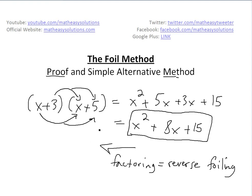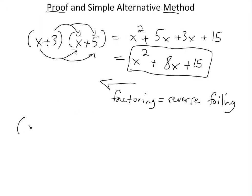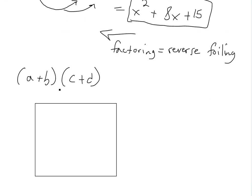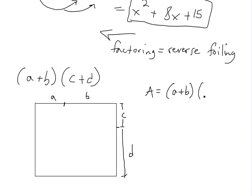Now for the proof — it's quite simple. We're given the general form A plus B times C plus D. We'll treat this as an area multiplication. We call this length A, this one B, and then this distance here C, and the last one D. So the total area is equal to A plus B times C plus D.